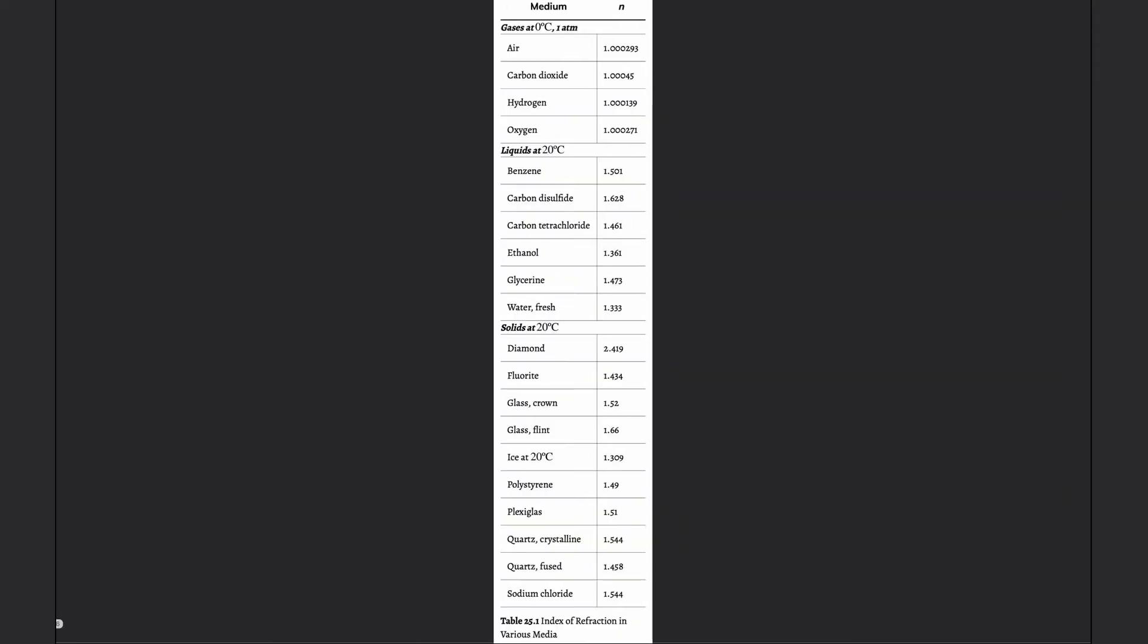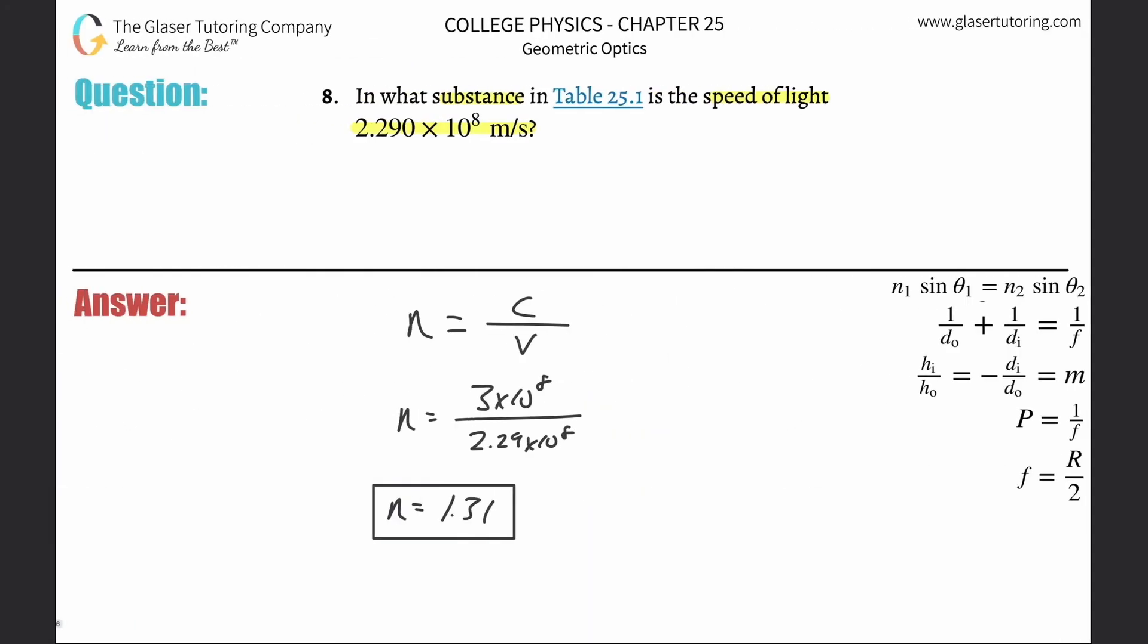So we look through our table over here, we're looking for 1.31. 1.31, where are you? Going once, going twice, I can't even find you. 1.31. Do you see it? I see it. It's about ice. That's the closest one. So ice at 20 degrees Celsius.